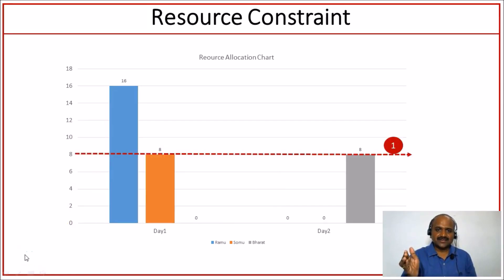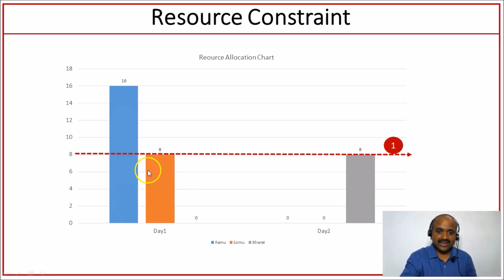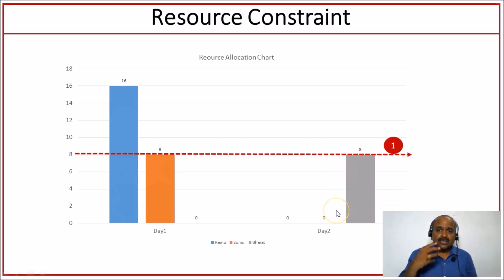We have a resource constraint: no resource should be planned more than eight hours on any given day. On our resource graph, Ramu is over-allocated because he is allocated for 16 hours — more than eight hours — on day one. Somu is allocated for eight hours on day one and Bharat is allocated for eight hours on day two. So to honor this constraint, what is the way out?